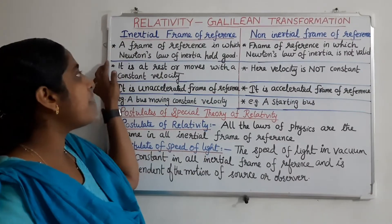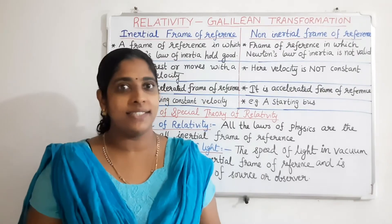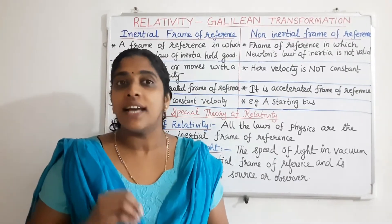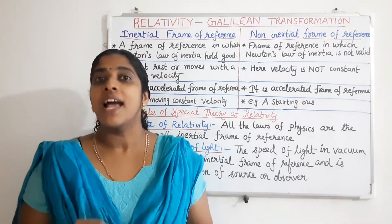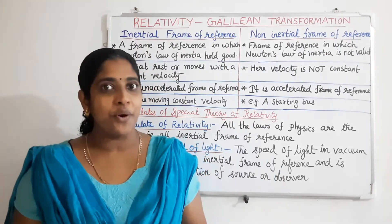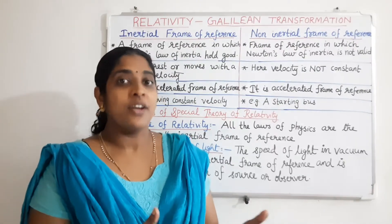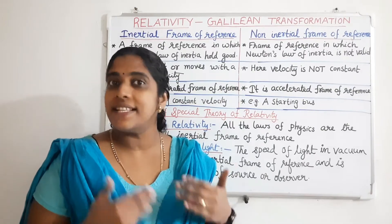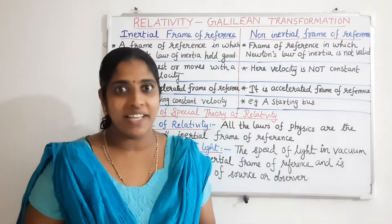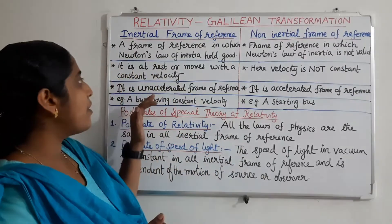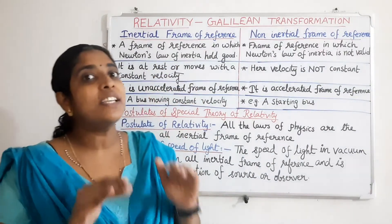An inertial frame of reference is one in which Newton's law of inertia is valid — that is, Newton's first law. Every body continues in a state of rest or uniform motion unless an unbalanced external force acts on it. If the body is at rest or at uniform motion and no external force is acting on it, that means no acceleration is present. So this type of frame of reference is at rest or moves with a constant velocity.